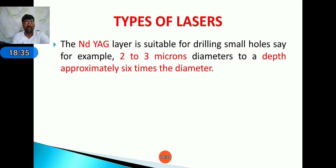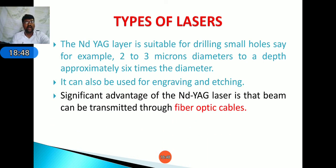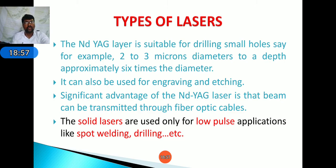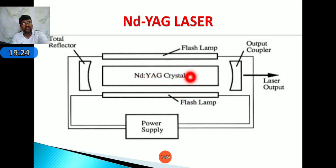The Nd:YAG laser is suitable for drilling small holes — for example, 2 to 3 microns in diameter, with depth approximately six times the diameter. It can also be used for engraving and etching. A main advantage is that it can be transmitted through a fiber optical cable. Solid state lasers are used for low pulse applications like spot welding and drilling.